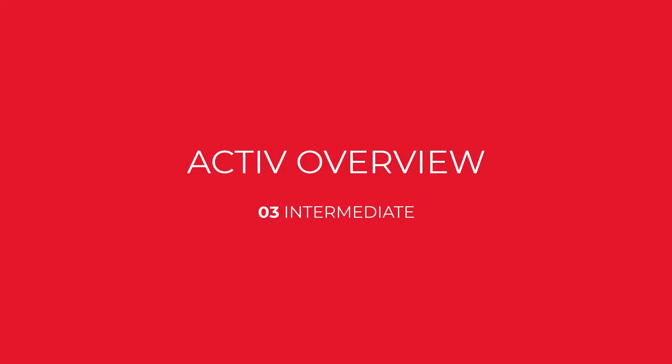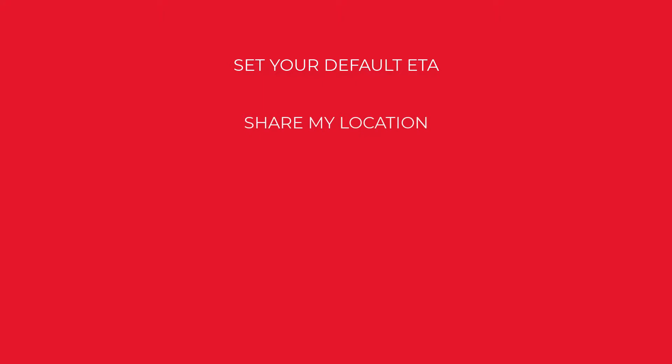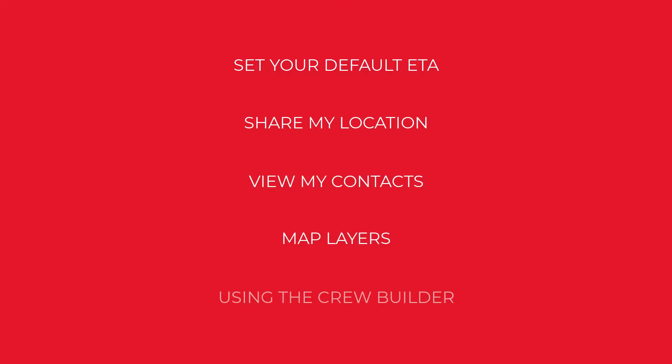Welcome to the third video in our series. I'll be covering some of the intermediate features of the RFS Active System. In this video I'll be covering: set a default ETA, sharing my location, viewing my contacts, map layers, and using Crew Builder.